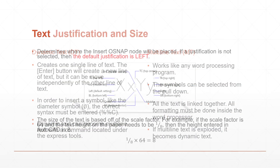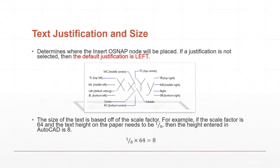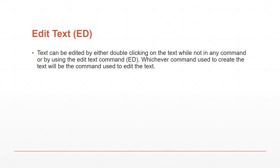Justification controls how you want to control your text — by the right, bottom left, or other options — and it will create nodes or little dots in those areas that you can control and move. For text height calculation: if you're using that same scale factor of 64 and you want your text height to be 0.125 or an eighth of an inch, you multiply those two together, so your text height for that drawing will be a height of eight. The Edit Text command is used to edit text. You can easily double-click on text with no command active, or type ED and Enter.